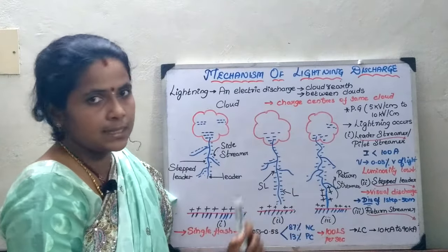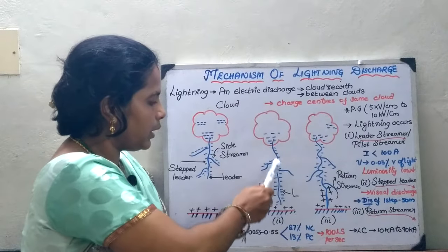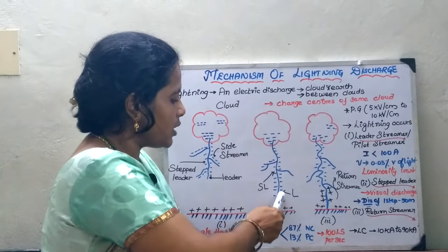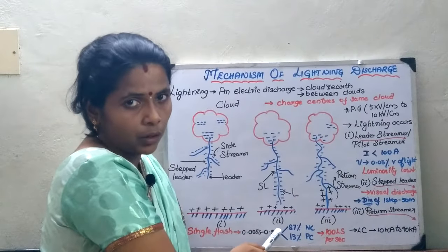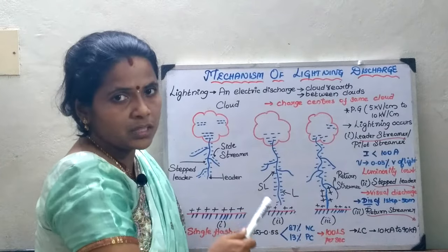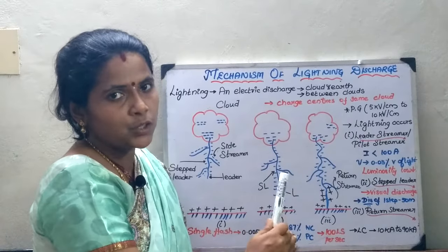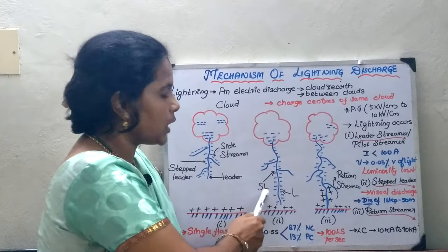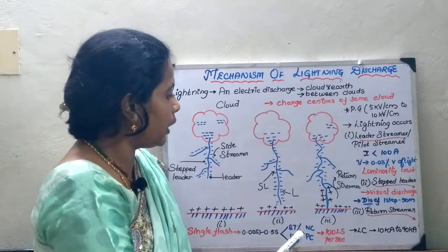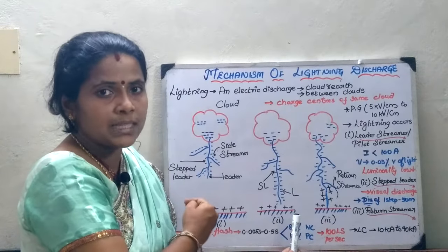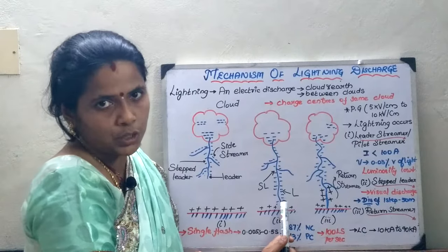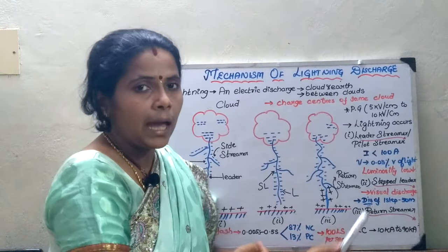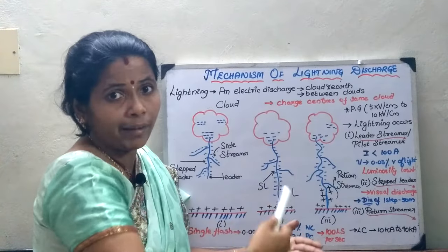In the second case, compared to the first, the discharge tries to reach the ground depending on its velocity and charge nature, but does not fully reach it, resulting in many stepped leaders. If it has considerable energy it results in the penetration of the stepped leader. In this case luminosity is higher, there is a visual discharge phenomenon, and each step is in the range of 50 meters.